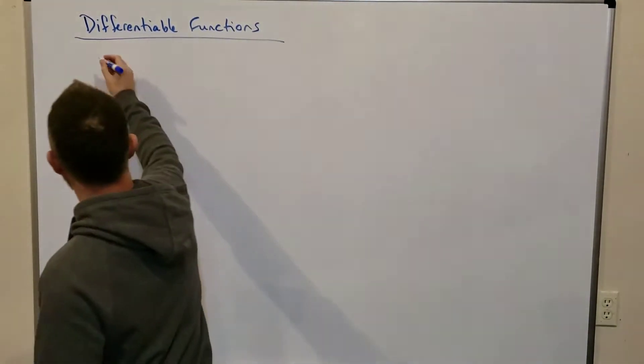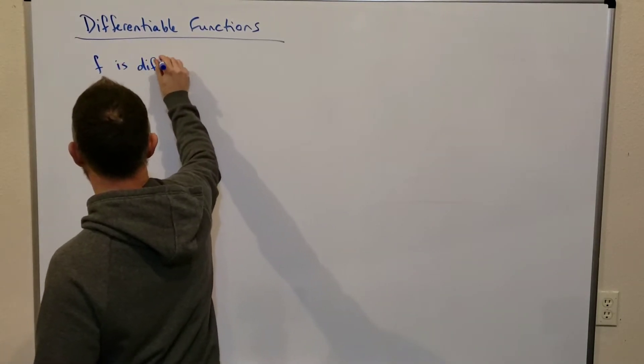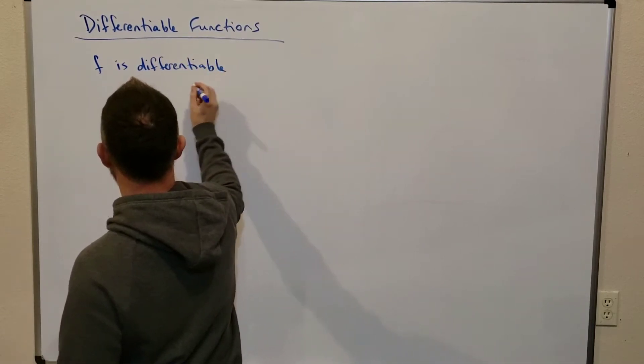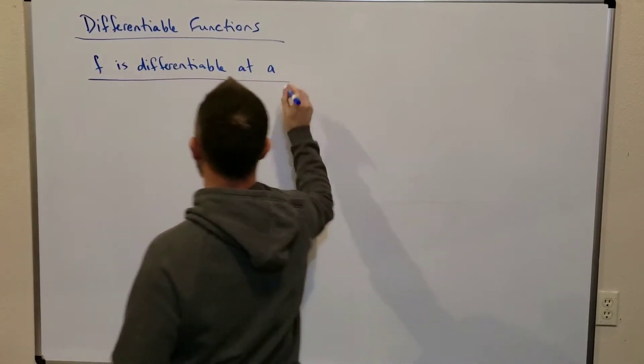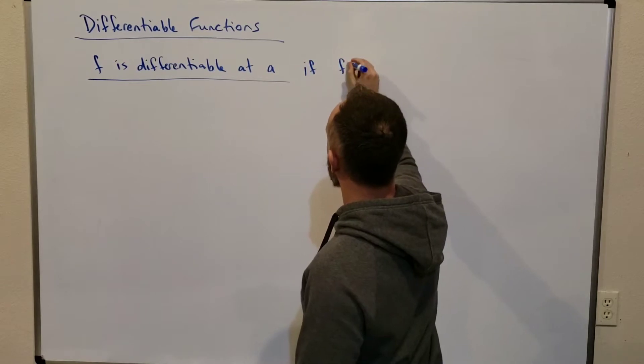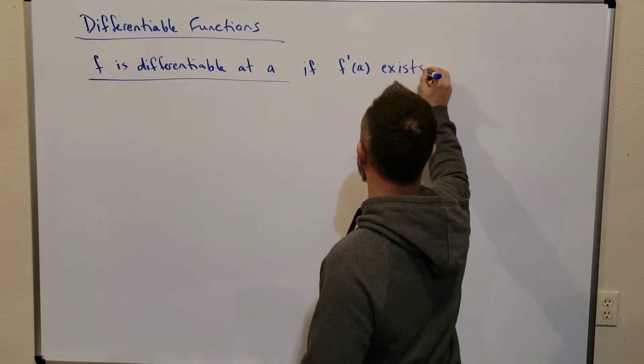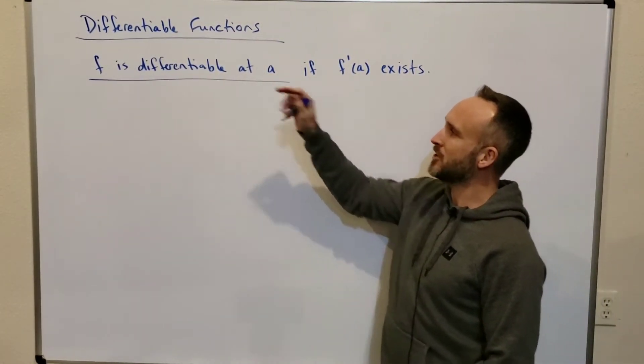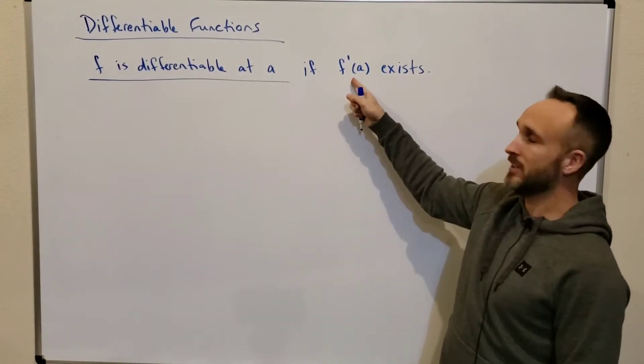We say that the function f is differentiable - it takes practice saying and writing this word for sure. f is differentiable at some number a if f prime of a exists. Now, it's kind of a weird thing to say. Basically, it's saying the function is called differentiable if the derivative exists.